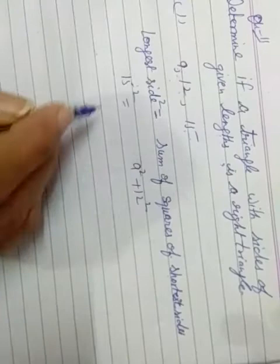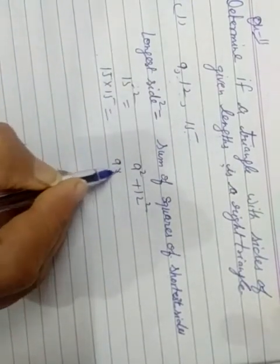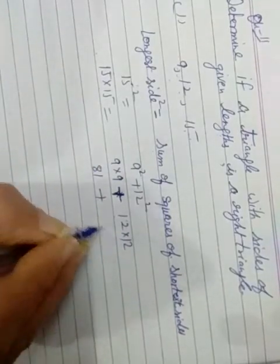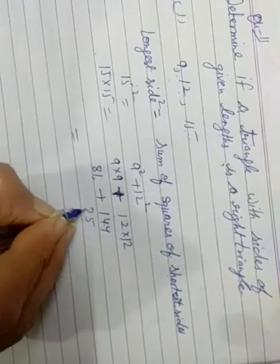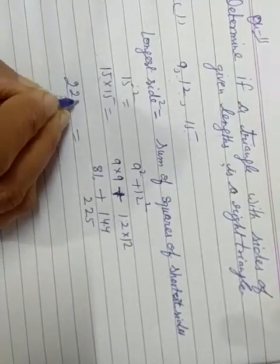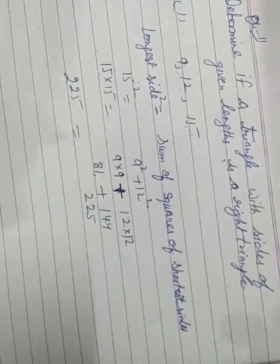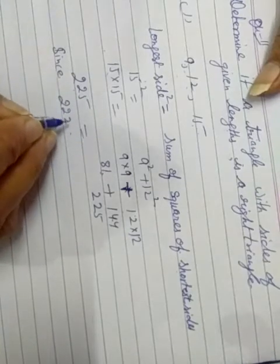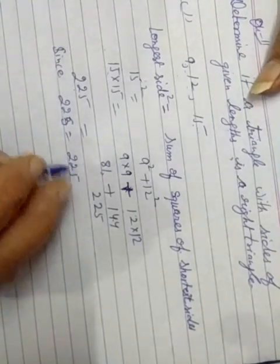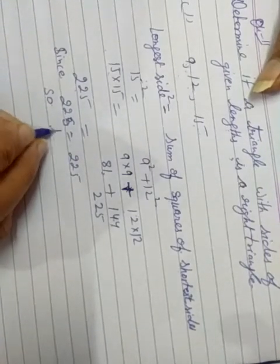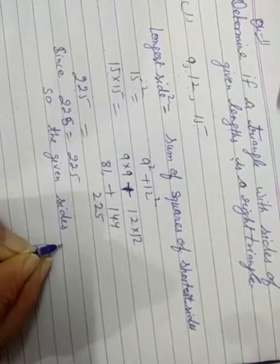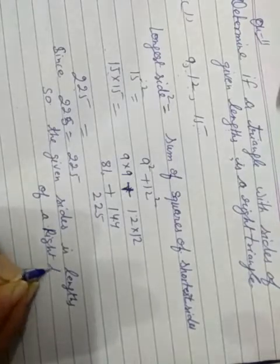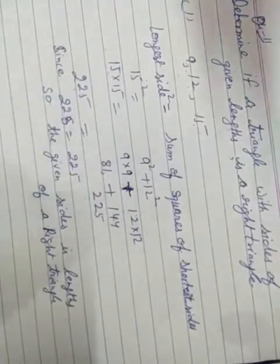15 square is equal to 9 square plus 12 square. 15 into 15... 9 into 9 plus 12 into 12. That's 81 plus 144, which equals 225. 15 multiply by 15 we get 225. Since 225 is equal to 225, the given sides is length of a right triangle. If they are equal, that means it is the sides of a right angle triangle.